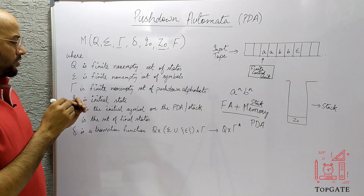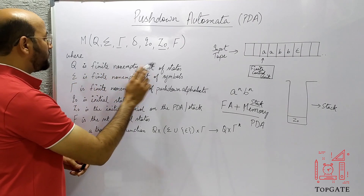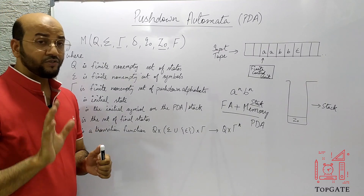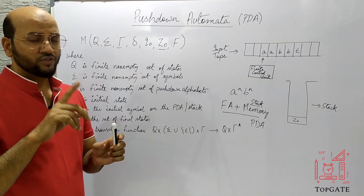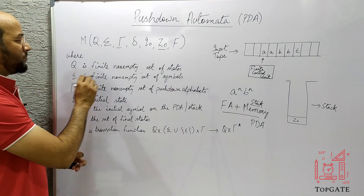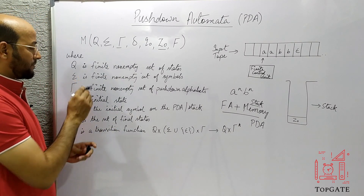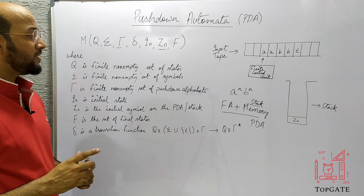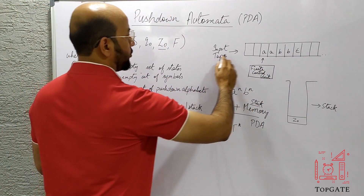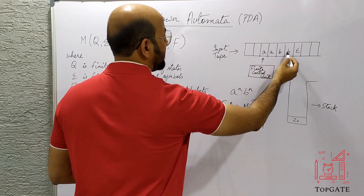Let me explain each tuple. Q is a finite, non-empty set of states. While accepting any string or language, we transit from one state to another — Q naught, Q1, Q2, Q3, and so on — all included in capital Q. Then there is sigma, which is a finite, non-empty set of input symbols. Suppose we are reading an input tape with the string a, a, b, b — those symbols a and b form sigma.